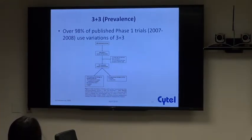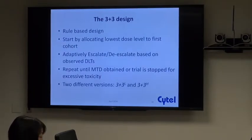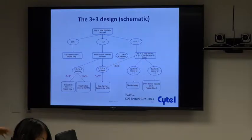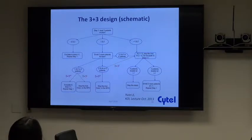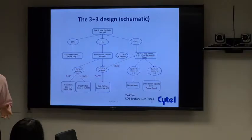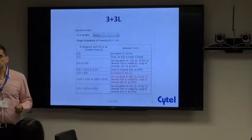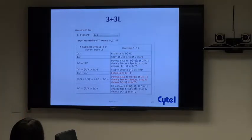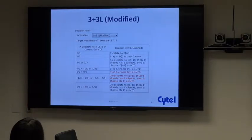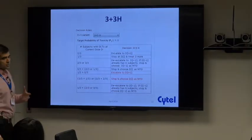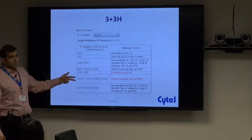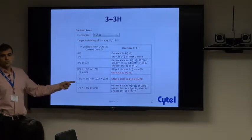The reason it's popular is that it's pretty easy to implement. This graph gives you a decision tree that a statistician or clinician needs to follow, so it's pretty clear how the algorithm works and how you reach the maximum tolerated dose. There are different versions of the three-plus-three depending on how conservative you want to be, and we've implemented three of those within EAST: the low version, the modified low version, and the high version. These differ by how they treat one toxicity out of three and two toxicities out of six.